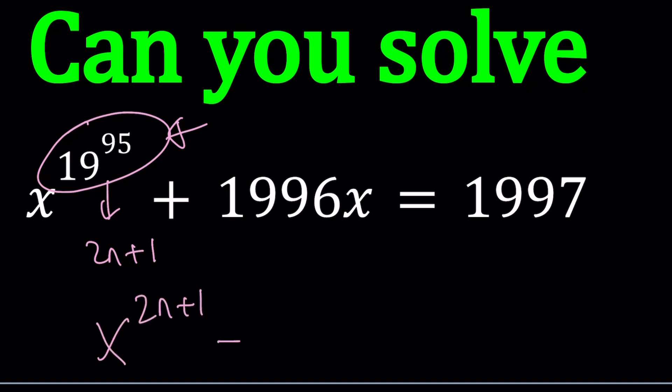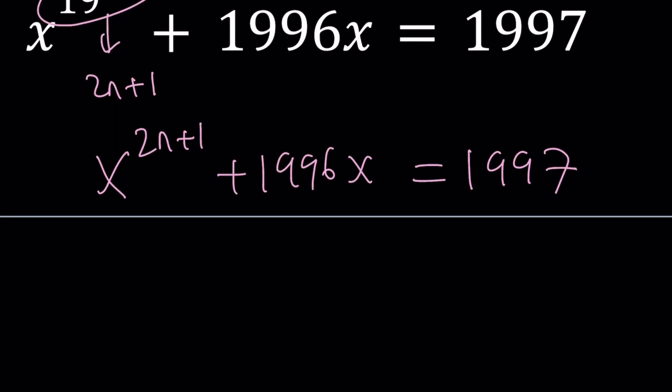So 19 to the power 95 is odd. Let's replace it with 2n plus 1 since that's an odd number. We're going to get x to the power 2n plus 1 plus 1996x equals 1997. Now I want to do the following: solving an equation usually means we have two curves and we're looking at the intersection points. How many intersection points are there? If you call this f of x and this g of x, each intersection point will be a solution.